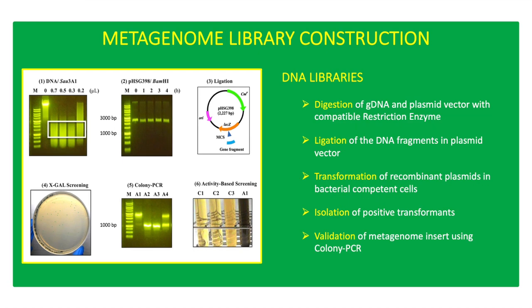DNA libraries are constructed by fragmentation of the genome with a restriction enzyme to generate DNA fragments, ligation of the DNA fragments into a plasmid vector, and transformation of recombinant plasmids in bacterial competent cells. Transformants in a DNA library harbor different DNA fragments from the genome.